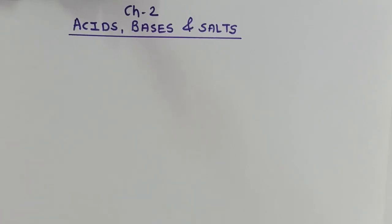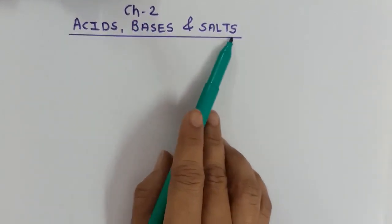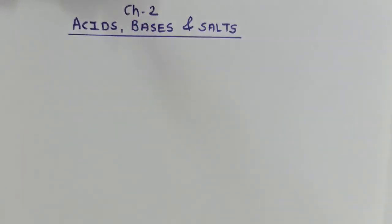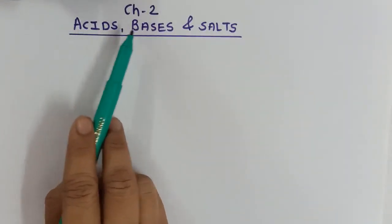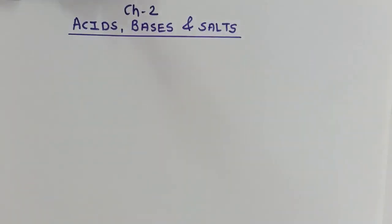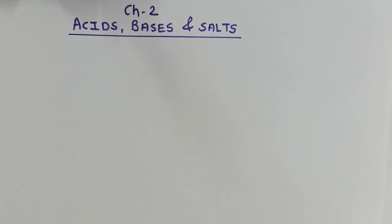Hello dear students, today we are going to start with Chapter 2 of our 10th class chemistry — acids, bases and salts. In this chapter we are going to study the definitions of acids and bases, their properties, their various chemical reactions, and different kinds of salts. Generally students think that only sodium chloride is the salt, but there are various salts used in our daily life. We will study how they are prepared and what are their other uses.